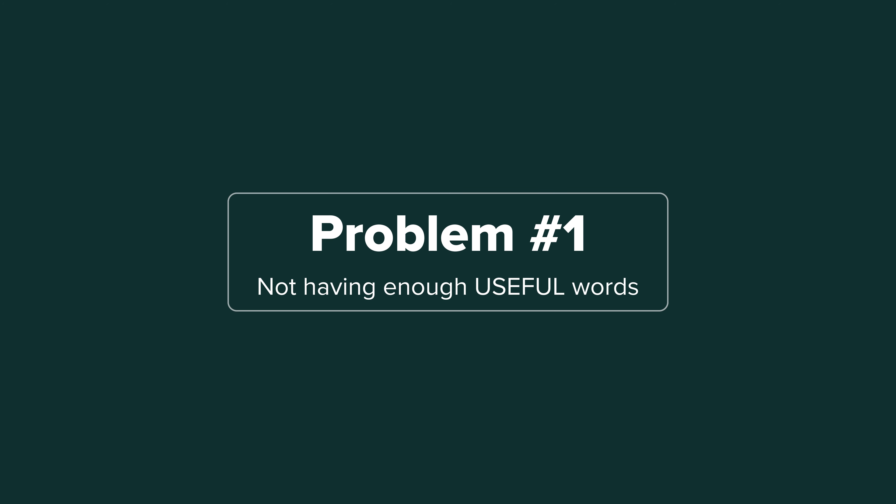The first problem with vocabulary is not having enough useful words. You might know a hundred niche words, but when you go to make a sentence about your life, those niche words cannot be used. So you are lacking very basic vocabulary to talk about your life. What can you do today, and for the following months and years, to add all the needed and useful words to your vocabulary?